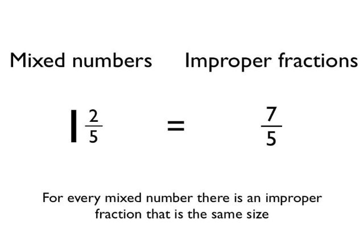So in this case, 1 and 2 fifths is actually exactly the same size as 7 fifths. For every mixed number, there is an improper fraction that is exactly the same size.